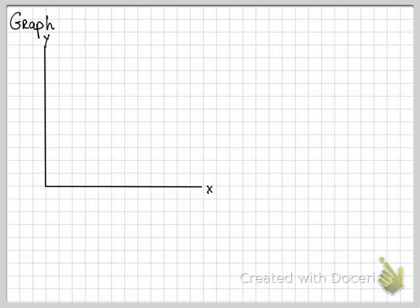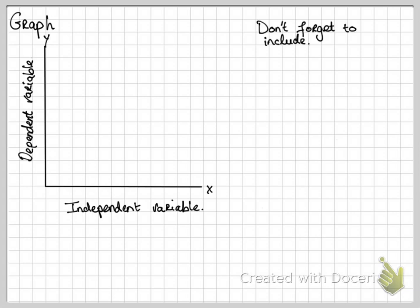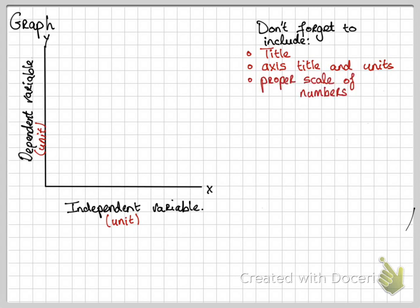Next is a graph. We should be well aware that there's a y and x-axis to a graph. On the x-axis is the independent variable, where on the y-axis is the dependent variable. Don't forget to also include the following: a title, axis titles and units, so you should have the units underneath both, and you should have a proper scale of numbers.